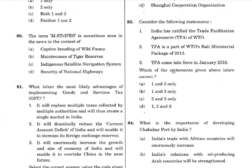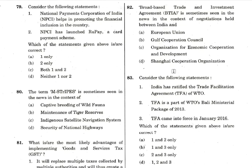Question 79 is about NPCI — one of the easiest questions. NPCI of India helps in promoting financial inclusion — that's a correct statement. NPCI has also launched RuPay, UPI, BHIM, and other things. RuPay is actually the payment gateway — the Indian version of MasterCard and Visa. So statements one and two are both correct. Very easy question.